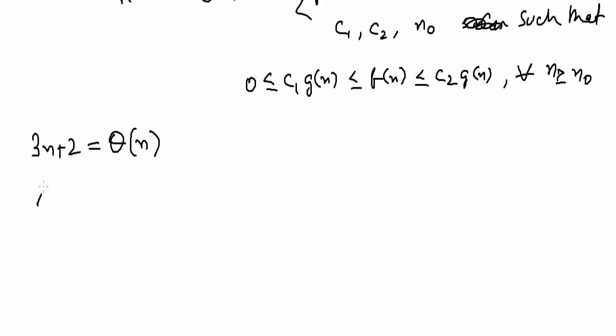We have done for... So we will consider f(n) to be 3n plus 2. We will consider c2 g(n) to be 4n and c1 g(n) to be 3n.